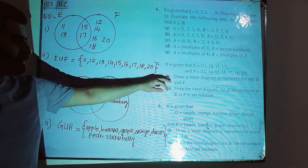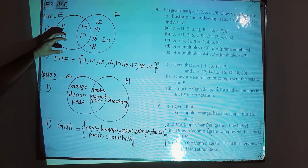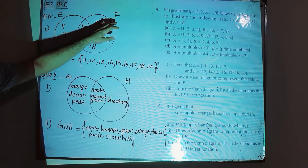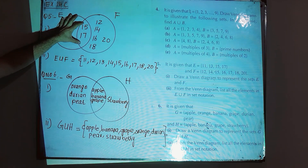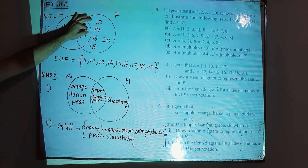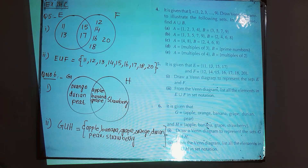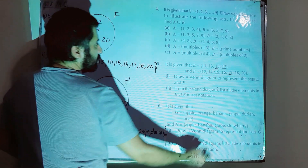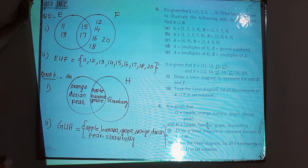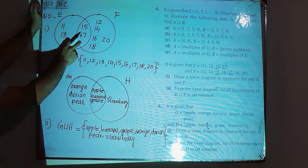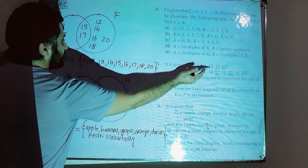Part one: draw a Venn diagram to represent sets E and F. Draw two circles — one for E and one for F. The overlapping part contains elements in both sets. 15 and 17 are part of both sets, so they are written in the overlapping section.